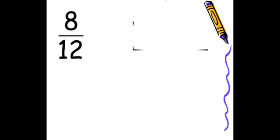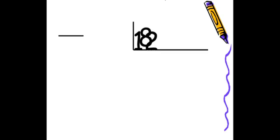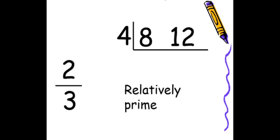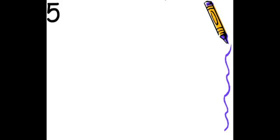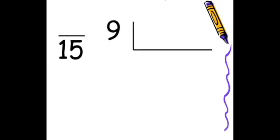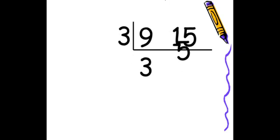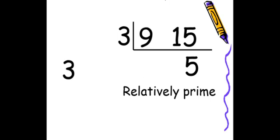Let's take a look at doing it a different way. If you started with 4, that would be the fastest way. 8 divided by 4 is 2, and 12 divided by 4 is 3. So our fraction in simplest form is 2 thirds. Another example: 9 and 15. Think of what number can divide 9 and 15 evenly. If you guessed 3, you are correct. 9 divided by 3 is 3, and 15 divided by 3 is 5. Our fraction in simplest form would be 3 fifths, because 3 and 5 are relatively prime.